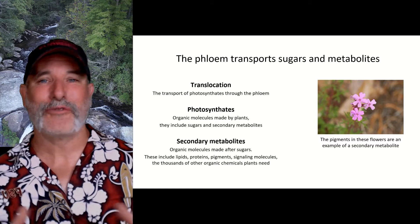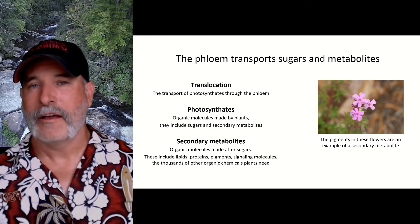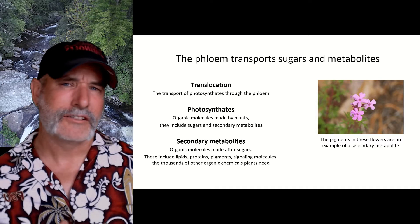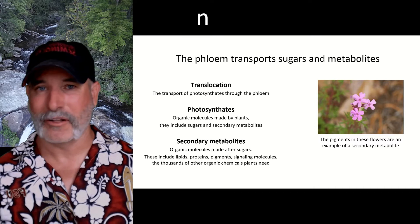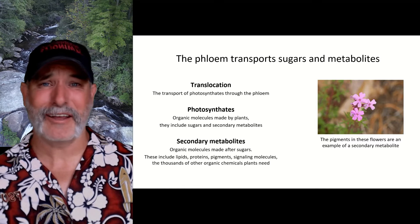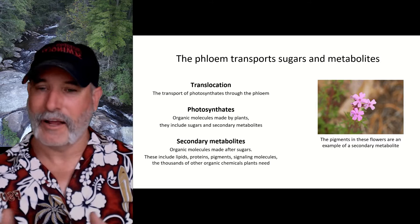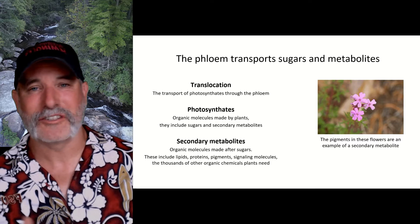Photosynthates are organic molecules that the plant makes — that includes sugars like glucose, and also all the other things the plant makes after the carbohydrates, called secondary metabolites. When you look at a pretty flower with pigments — the blue pigment being anthocyanin — that's a secondary metabolite. If you like to cook with herbs and spices like oregano, thyme, and rosemary, those flavors are also secondary metabolites. They're called secondary because they're made after your carbohydrates like glucose, which is a primary metabolite. Plants make thousands of secondary metabolites.